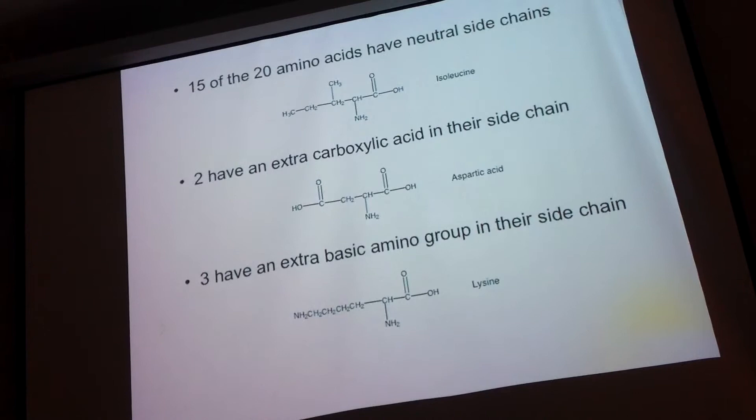This slide is just summarizing what we talked about — neutral side chains are mostly nonpolar groups; acidic ones have a carboxylic acid; basic ones have an amine. Most of the 20 amino acids have a neutral side chain.